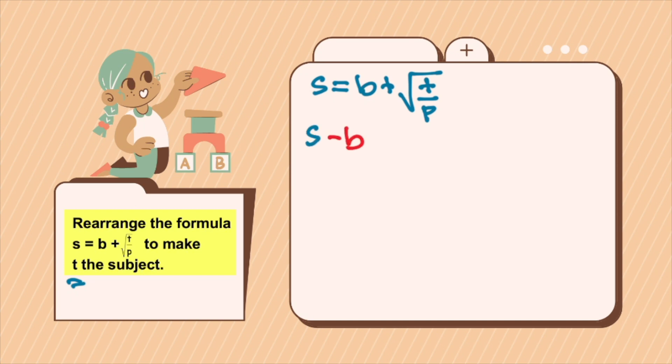So you will have s minus b equals square root of t over p.